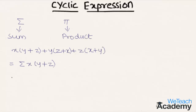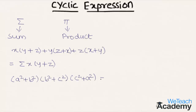Similarly, consider the expression a square plus b square, into b square plus c square, into c square plus a square. Since this is a product of expressions, we denote it as pi abc of a square plus b square.